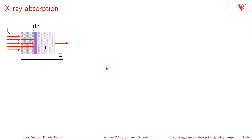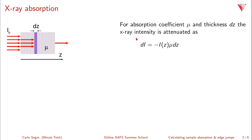The absorption event is the following. You have an incident intensity on a small slab dz with an absorption coefficient mu — this is a linear absorption. If I want to calculate how much intensity is attenuated across this little slab dz, I can write that as di, the change in intensity, equals minus i of z times the absorption coefficient times the thickness dz. This can be rewritten as di over i equals minus mu dz.